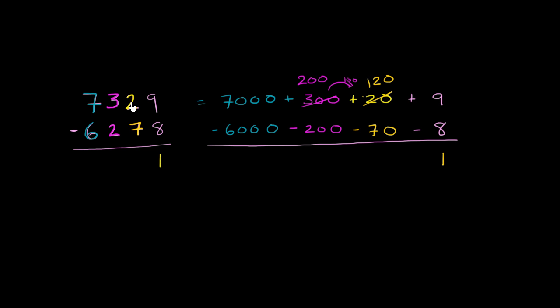If you want to think of it in a borrowing framework, you could say, let's take 1 from the 3, although that's a 300, so you're really taking 100. That becomes a 2. And you give that 1 to the tens place, and so that becomes a 12. Now what was really happening is you took 100, you gave it to the 20, it became 120. But now you can subtract.